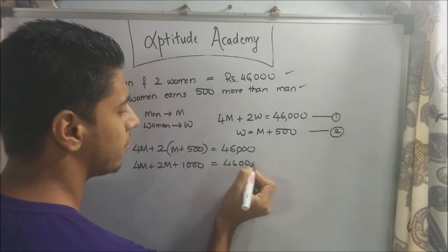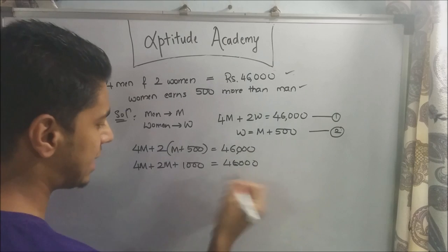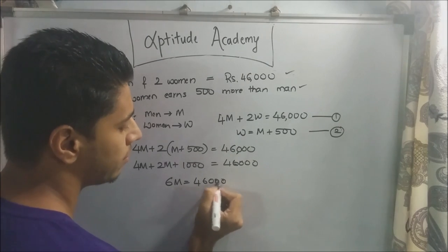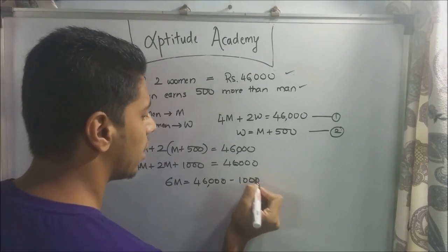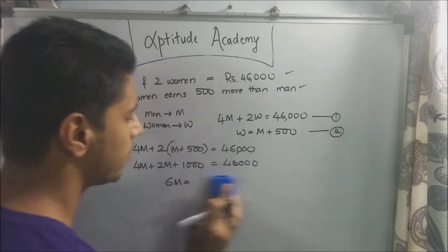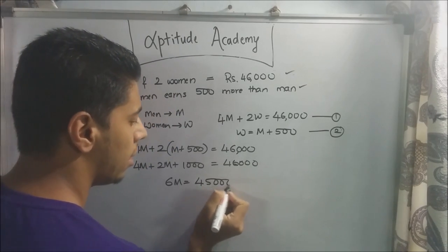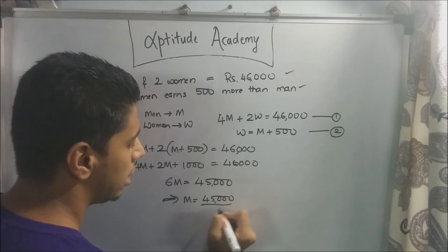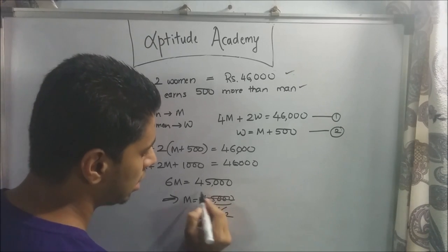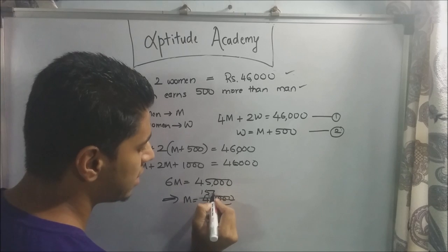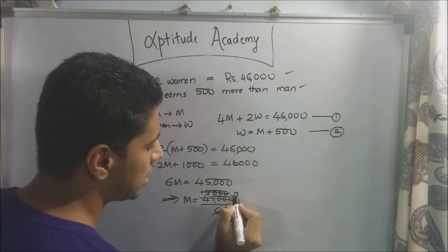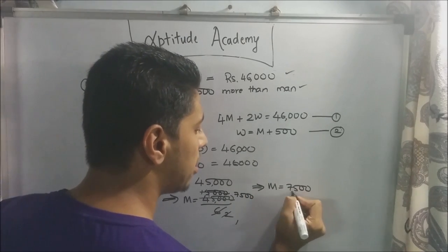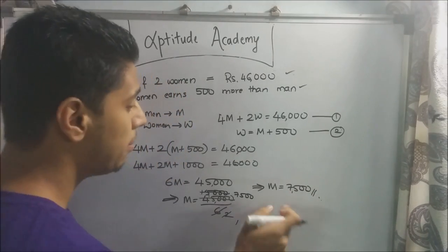Taking 1000 to the other side: 6m = 46,000 − 1,000 = 45,000. So m = 45,000 ÷ 6 = 7,500. Now, 7,500 will be one of the options and some of you might mark it — but remember, they've asked for the salary of the woman.